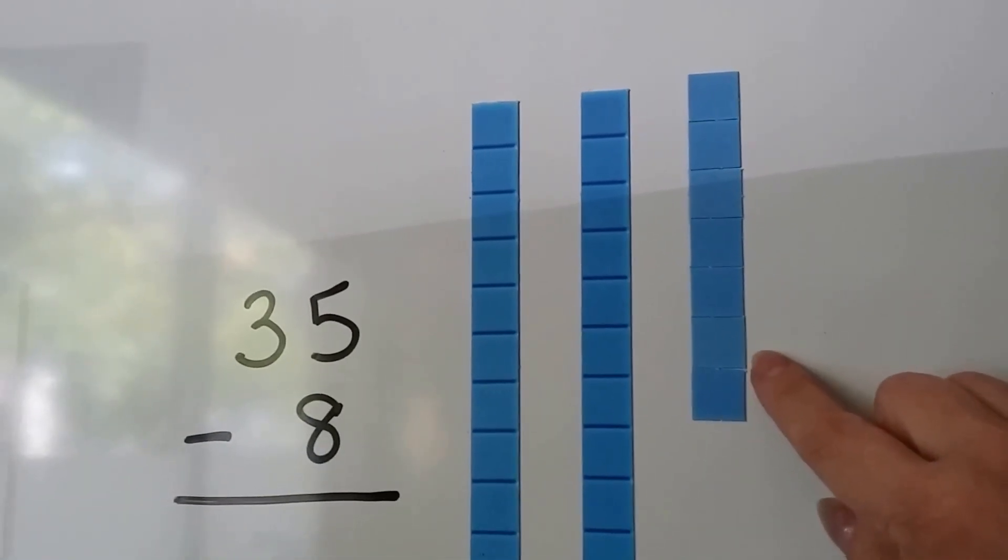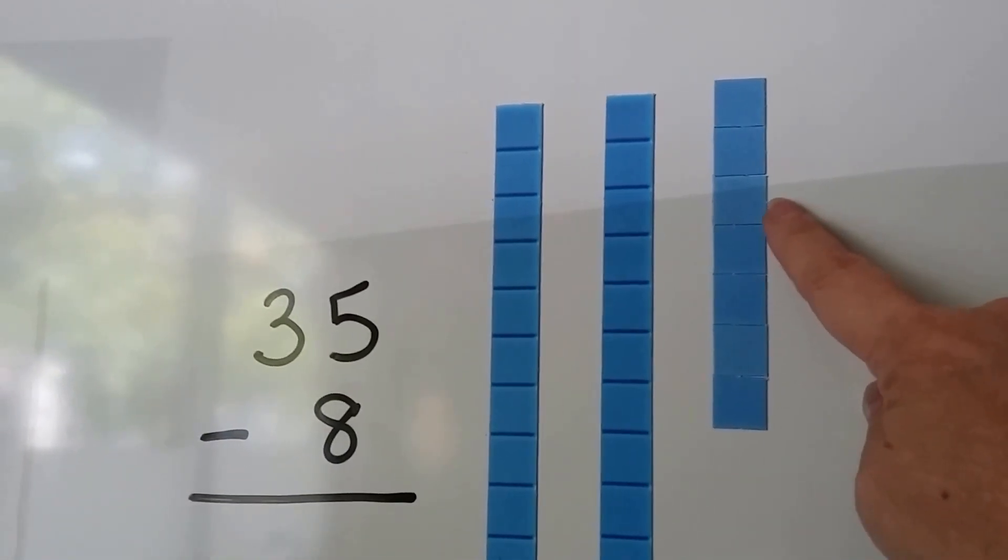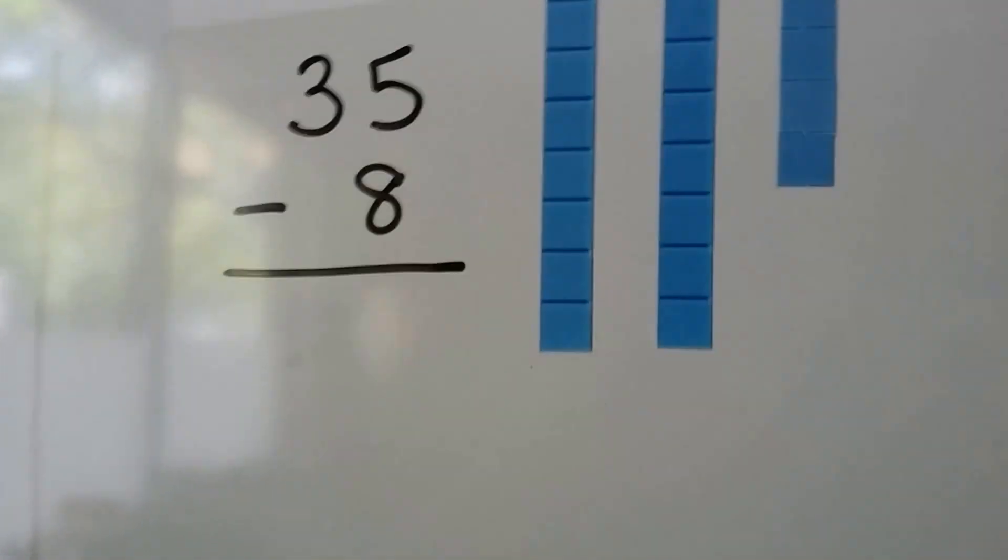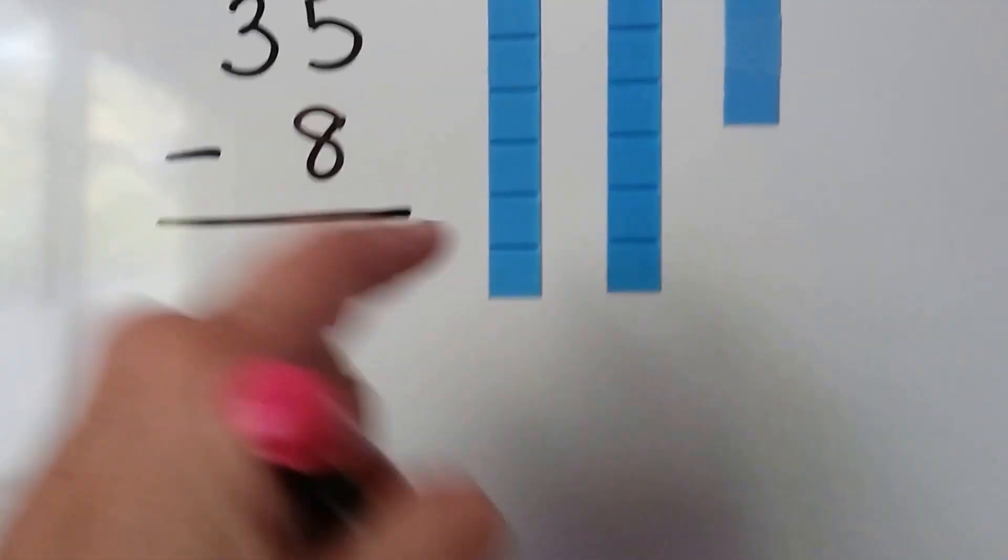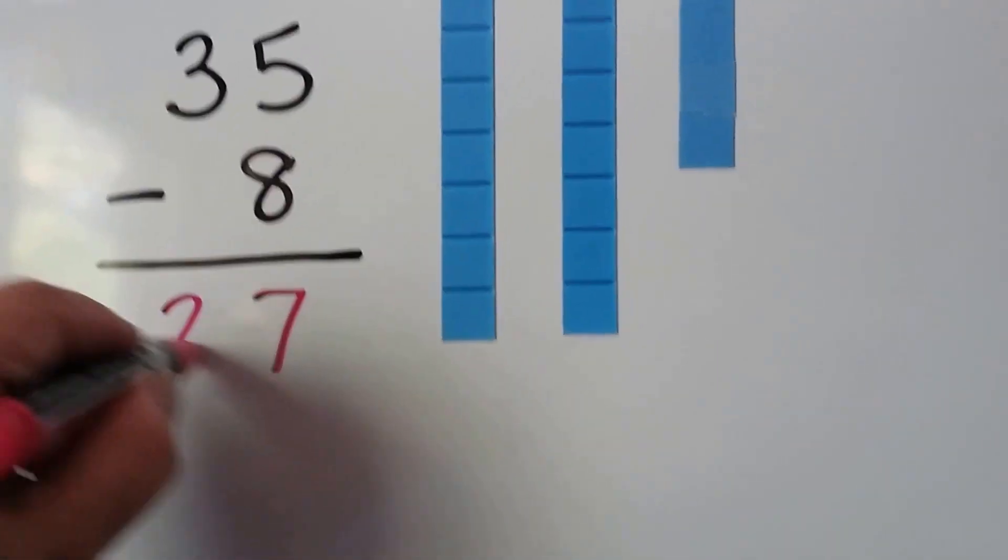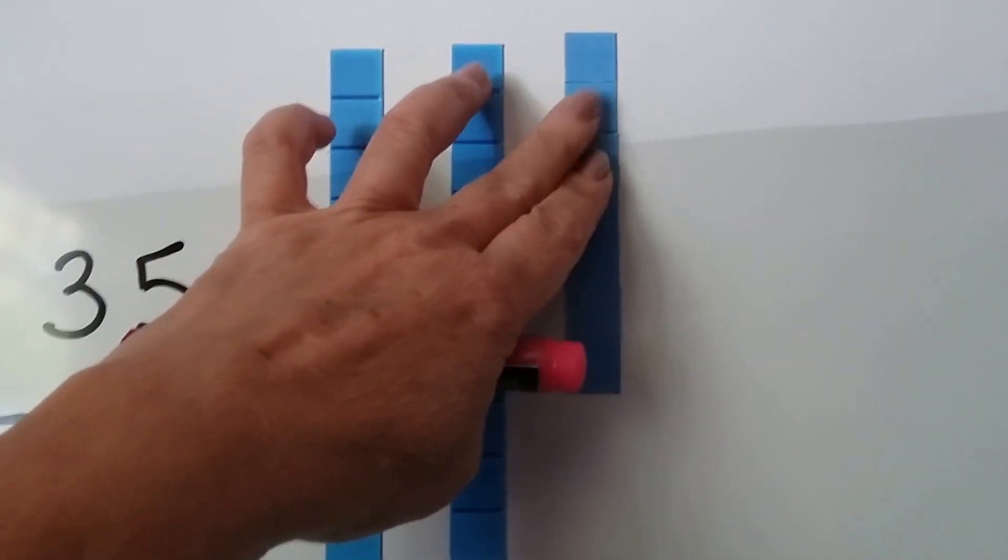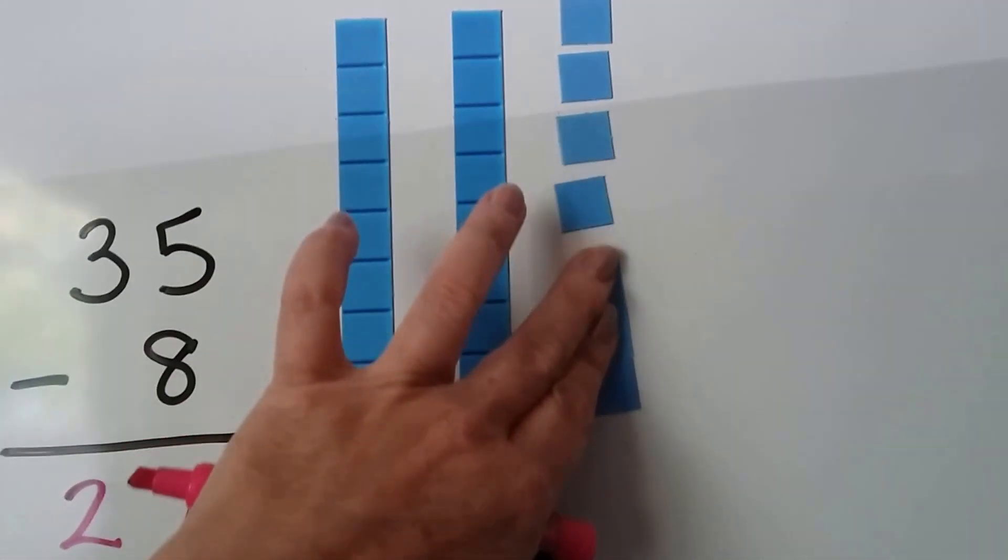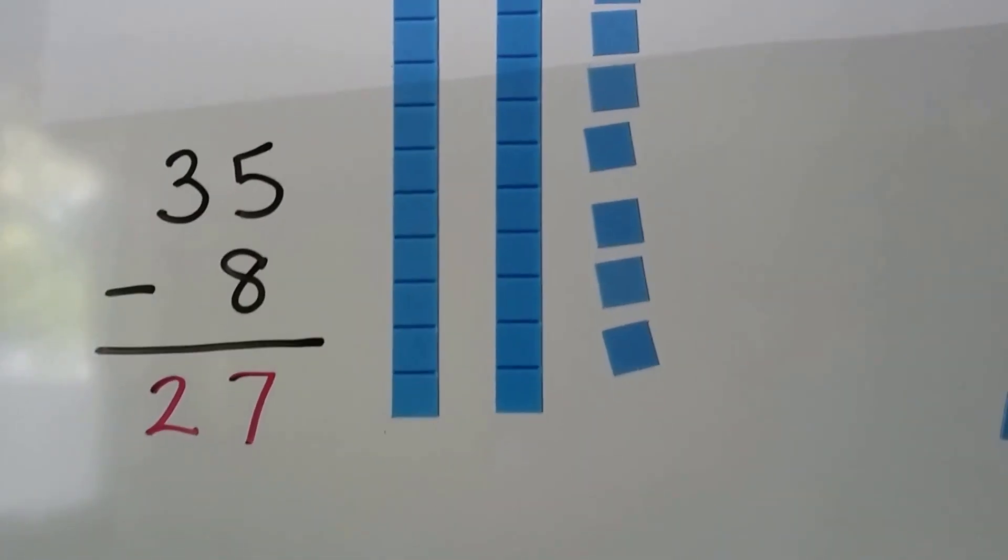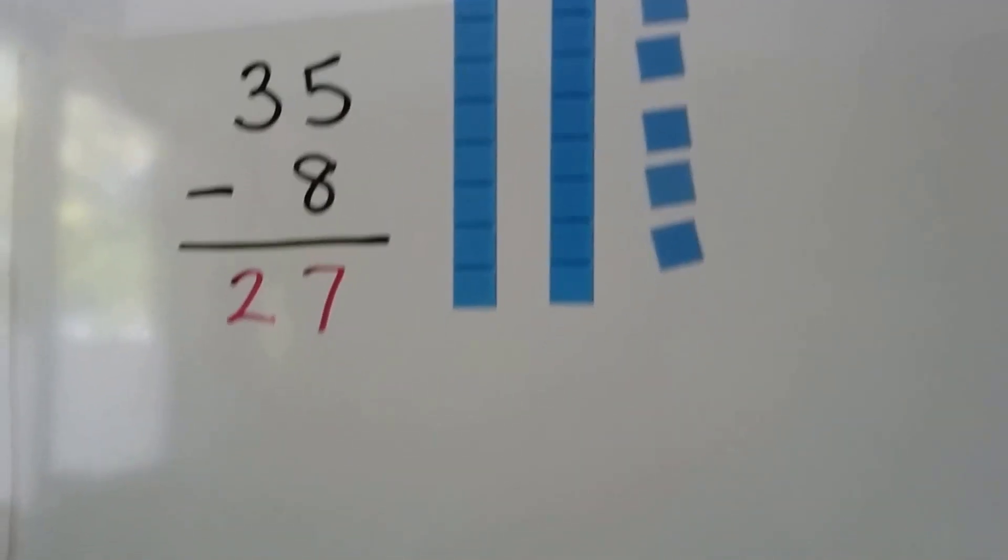That's going to leave 1, 2, 3, 4, 5, 6, 7 ones and two tens. We have seven ones here. So using models was helpful for that one.